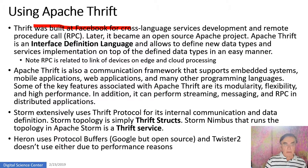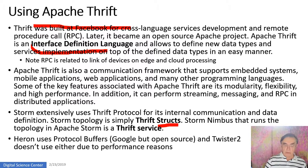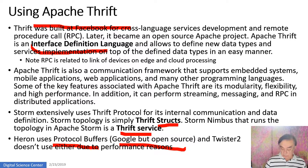Thrift was also used in Storm and is used for building messages. Thrift is an interface definition language — it effectively tells you how the messaging is implemented, the protocol it uses, and the API. Storm uses it for its internal communication and data definition. There's a struct in Thrift which defines what a Storm topology is — a data flow graph. Storm Nimbus is a Thrift service which is the controller for running a topology. Other approaches include Protocol Buffers from Google, which is used by Heron. Twisted2 doesn't use any of them because they have performance problems.